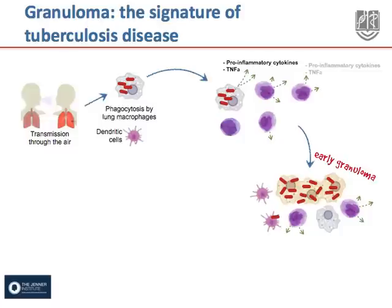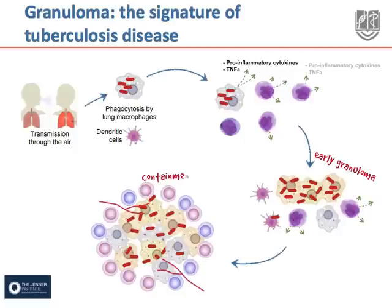Antigen-specific cells arrive at the granuloma, and this initiates the containment phase of infection. T cells secrete cytokines, activating macrophages to kill mycobacteria. The macrophages themselves differentiate into epithelioid, multi-nucleated giant cells, and foamy macrophages, which are full of lipid.